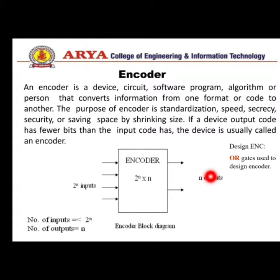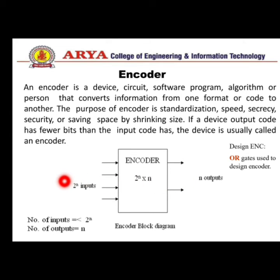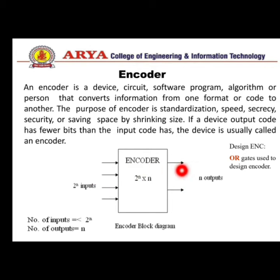In the general block diagram of an encoder, 2-power-n inputs vary from 0 to 2-power-n minus 1, and there are n output lines. For example, when n equals 2, there are 4 input lines and 2 output lines — this is called a 4-to-2 encoder.